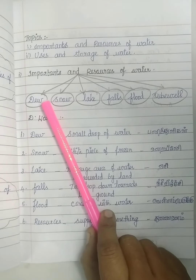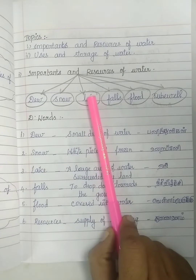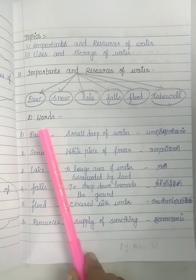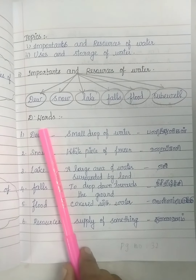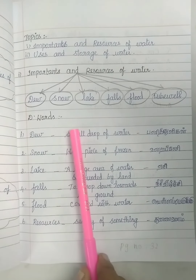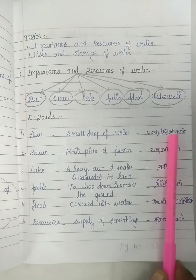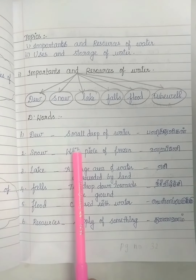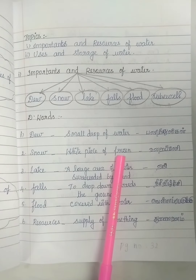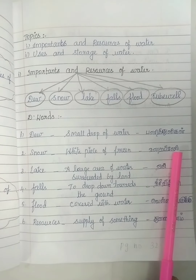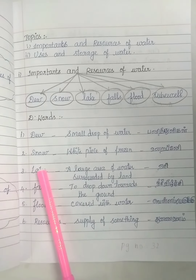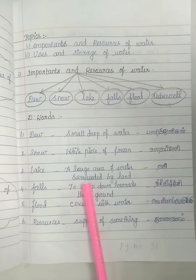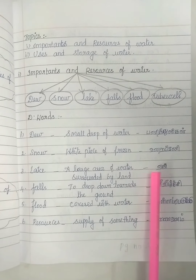A drop of water. Lake — a large area of water surrounded by land. In Tamil: Eri.